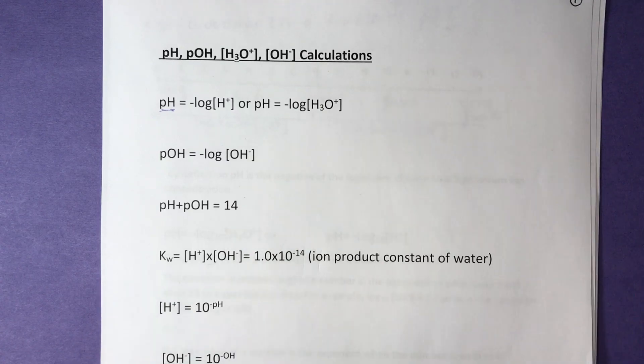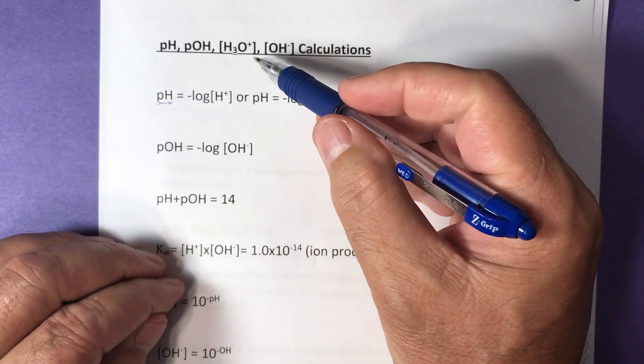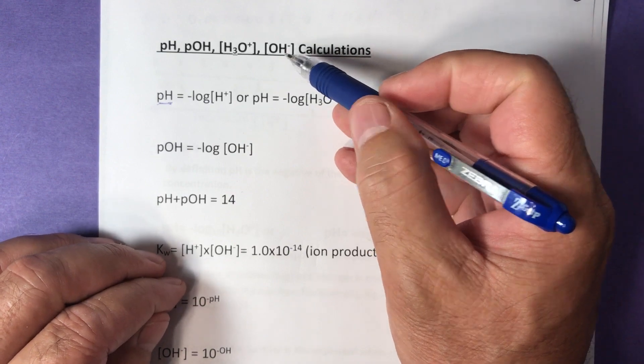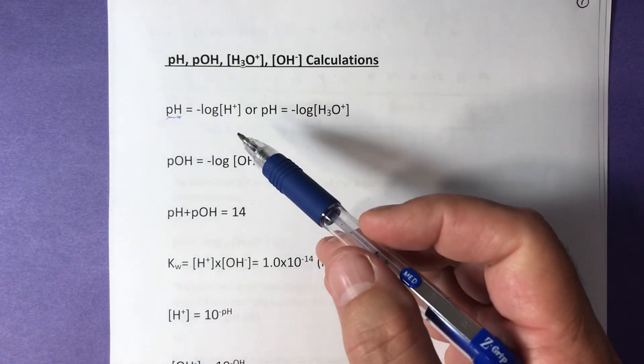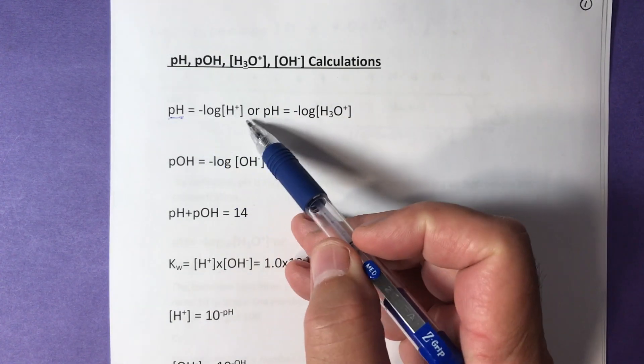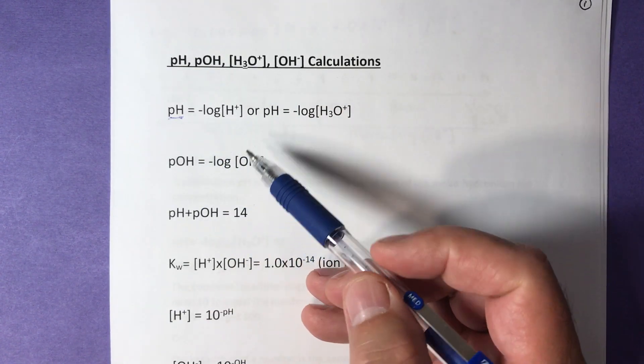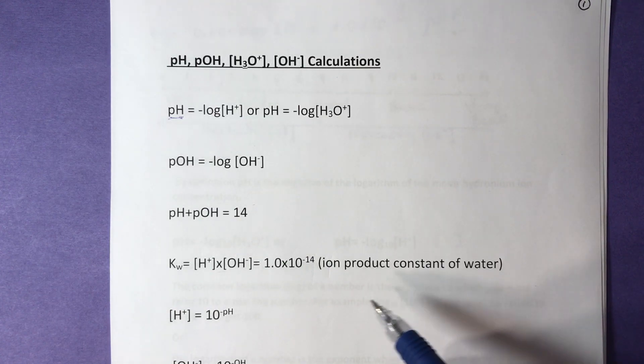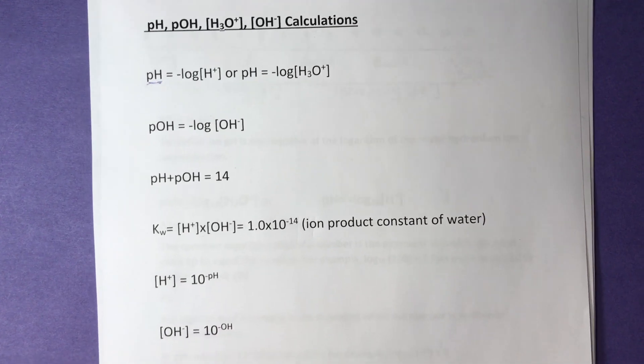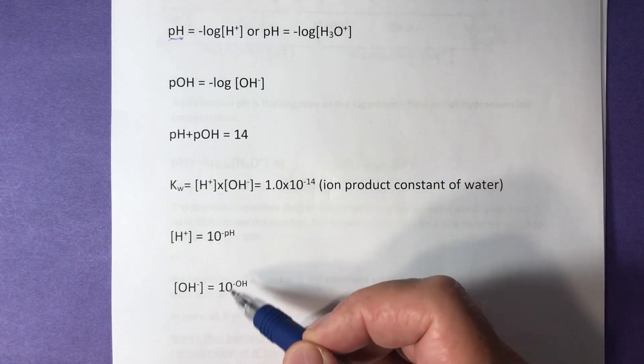In this video I'm going to talk about pH, pOH, H3O+, and OH- concentration calculations. Formulas I'm using for this video are the formula for pH, pOH, pH plus pOH equals 14, ion product constant formula, H+ concentration formula, and OH- concentration formula.